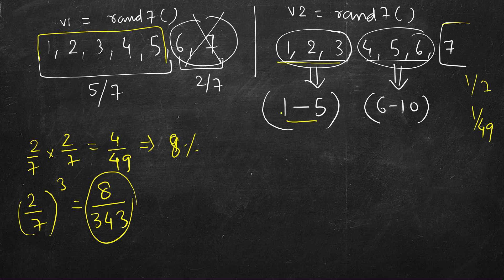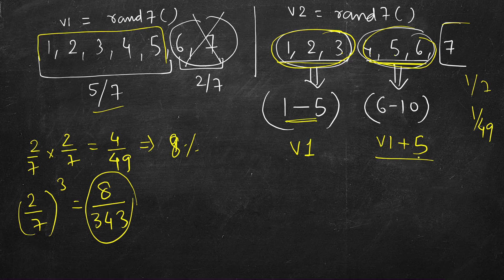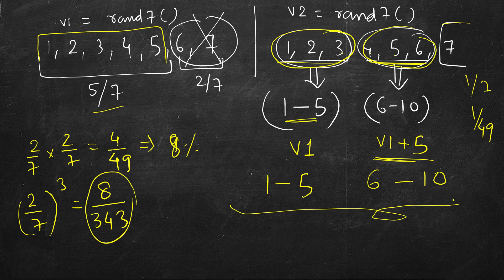The first half maps to 1 to 5, which is the value of v1. In this case we return v1; in the other case we return v1 plus 5 to get 6 to 10. Each of the 10 numbers has equal probability of appearing, because 1, 2, 3 and 4, 5, 6 are equal in all aspects — the probability of getting any one of the first group equals the probability of getting any one of the second group. We simply return the value or add 5 to it.